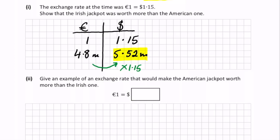So for instance, if a euro was only worth maybe 50 cents of an American dollar, what we would then see in this exchange rate is 4.8 million euros in Irish money. That would be equivalent to 4.8 multiplied by 0.5 or half of 4.8. So in dollars, that would be worth 2.4 million dollars.